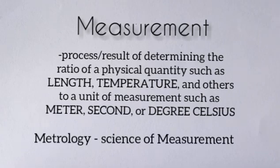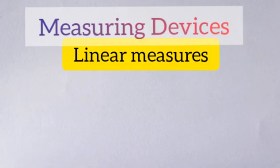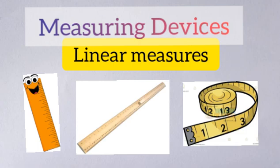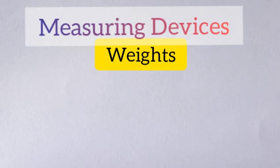Here are the measuring devices. First, let's have the instruments used to determine linear measures. We have the ruler, the meter stick, and the tape measure.